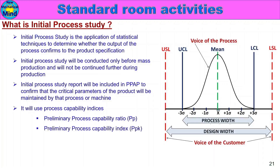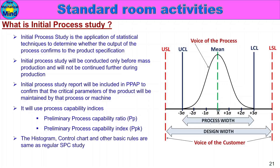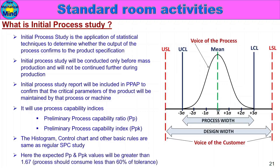The initial process study uses two indices: first, Preliminary Process Capability Ratio, PP; and second, Preliminary Process Capability Index, PPK. The expected PP and PPK values will be greater than 1.67, meaning the process would consume less than 60% of tolerance.